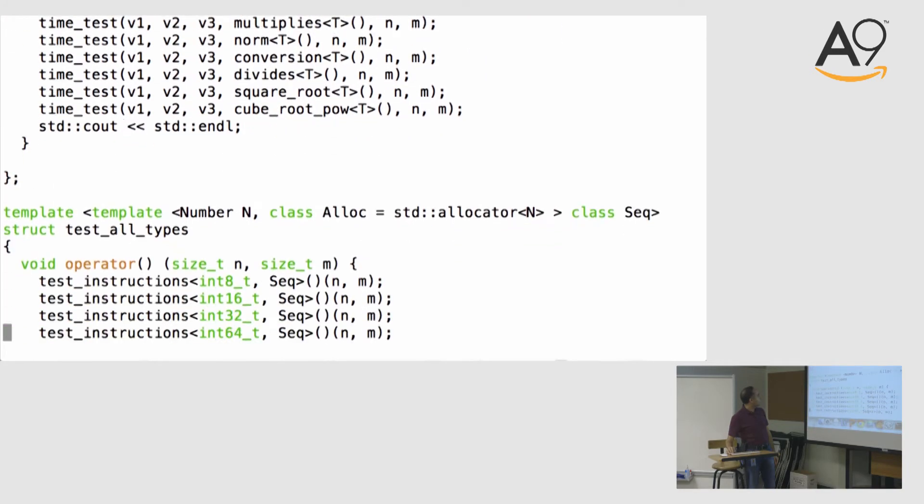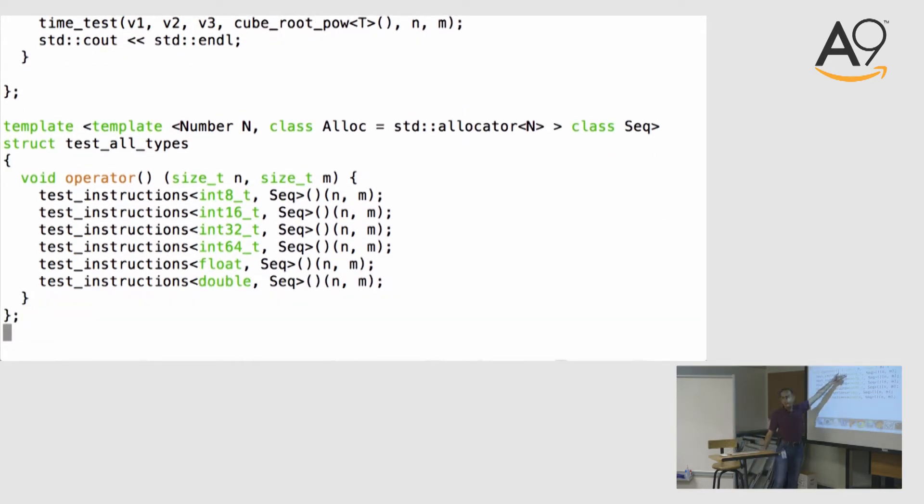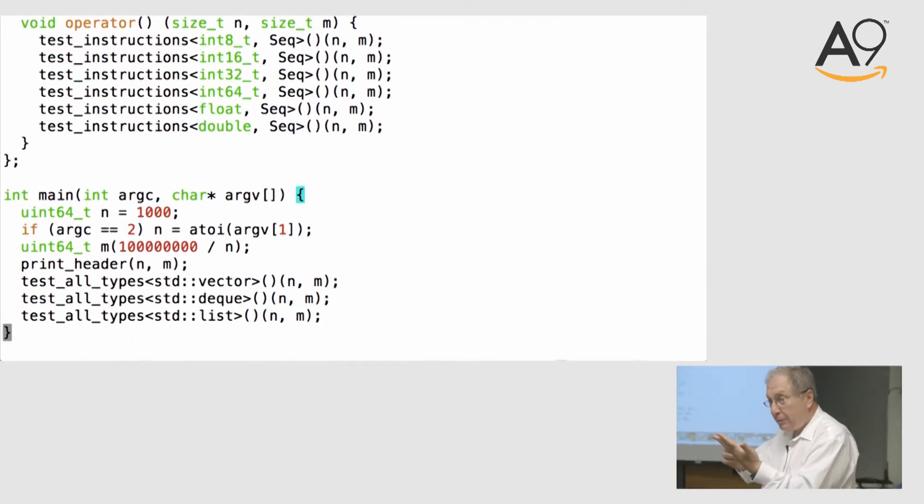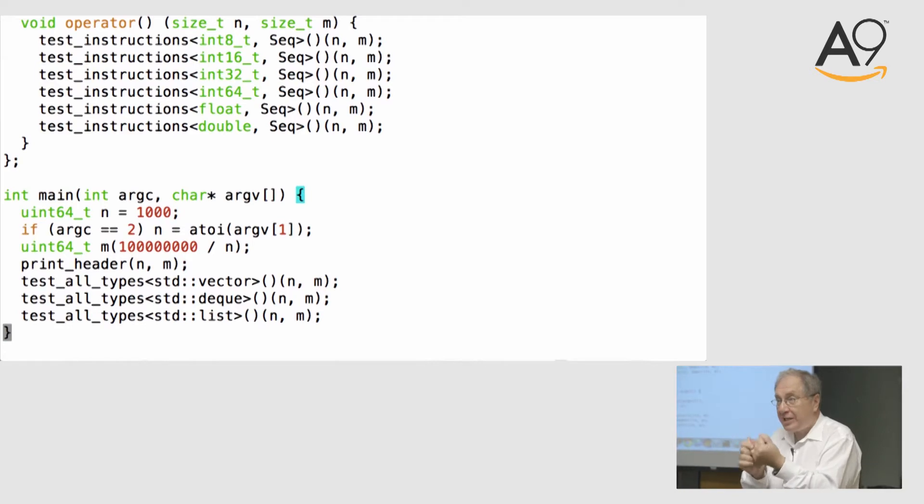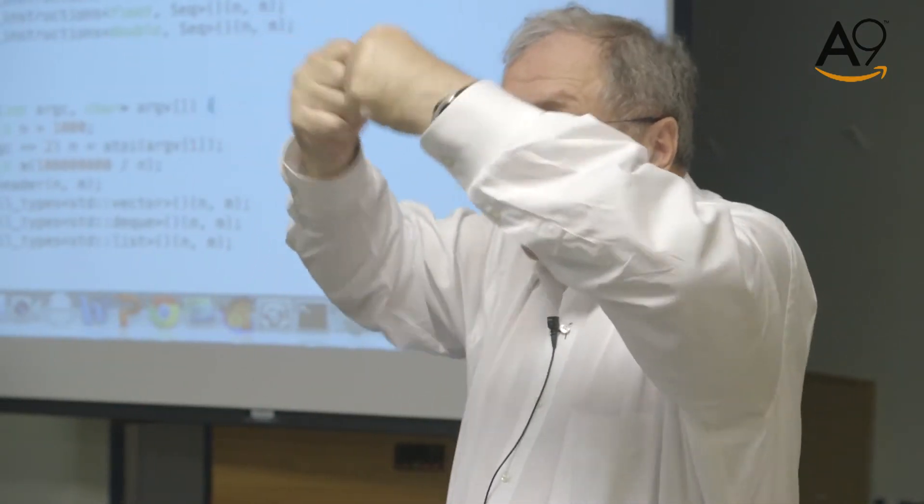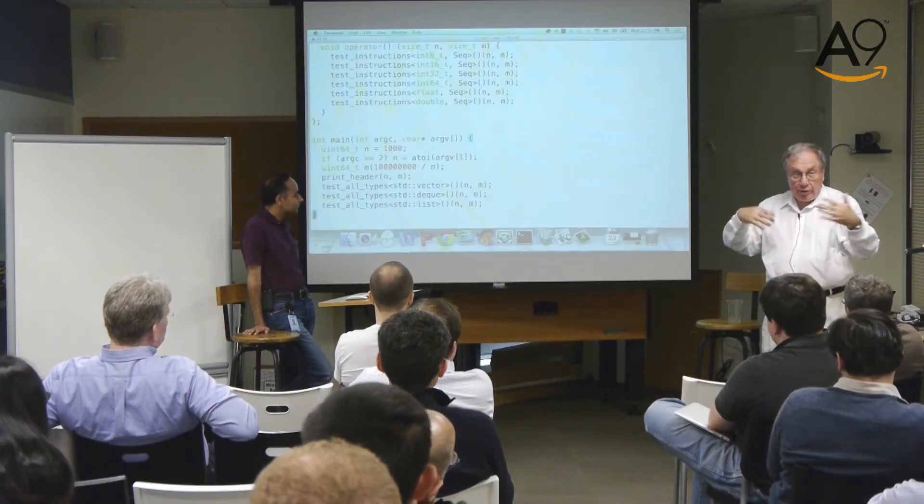They don't change from run to run. And we're going to do it for these six types, integers of these four sizes, float, double. Plus, we're going to use it for three types of sequences. So, what we vary is type, the data structure where type resides, and the operation, which we do on the type. But the thing is very simple. Take two things from the data structure, bring them up, combine them with whatever function, and store them.